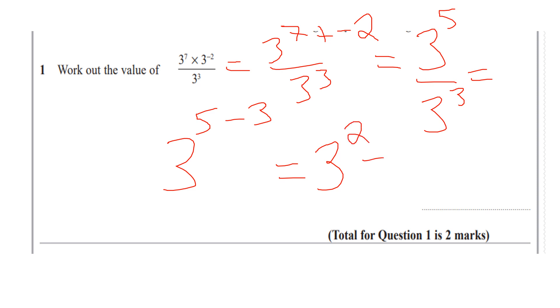Most students here would leave the answer as 3 squared. The question says work out the value of, so it wants a number as your numerical answer. So 3 times 3 is 9. So the answer is 9. One mark would be given if you put 3 squared. You get the full 2 marks if you put the numerical value.